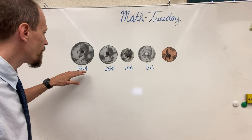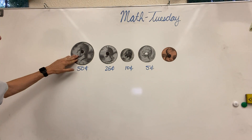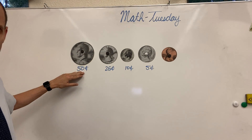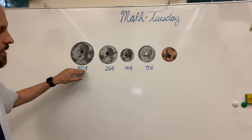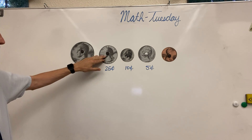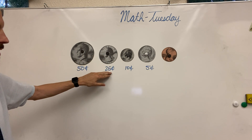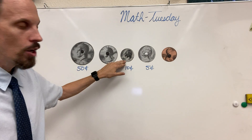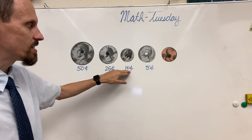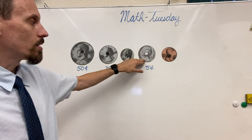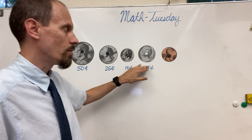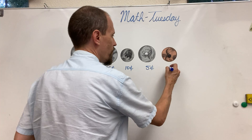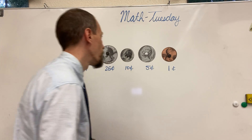So we have JFK, John F. Kennedy, who's on the 50-cent piece. George Washington, who's on the 25-cent piece. Franklin D. Roosevelt, who's on the 10-cent piece. Thomas Jefferson, who's on the 5-cent piece. And we have Abraham Lincoln on the 1-cent piece.